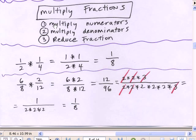Multiplying fractions: you multiply the numerators, multiply the denominators, reduce the fraction. What's 1 half times 1 fourth? You take the two top ones, multiply them. Two bottom ones, multiply them. 1 times 1 is 1. 2 times 4 is 8. And you're left with 1 divided by 8.